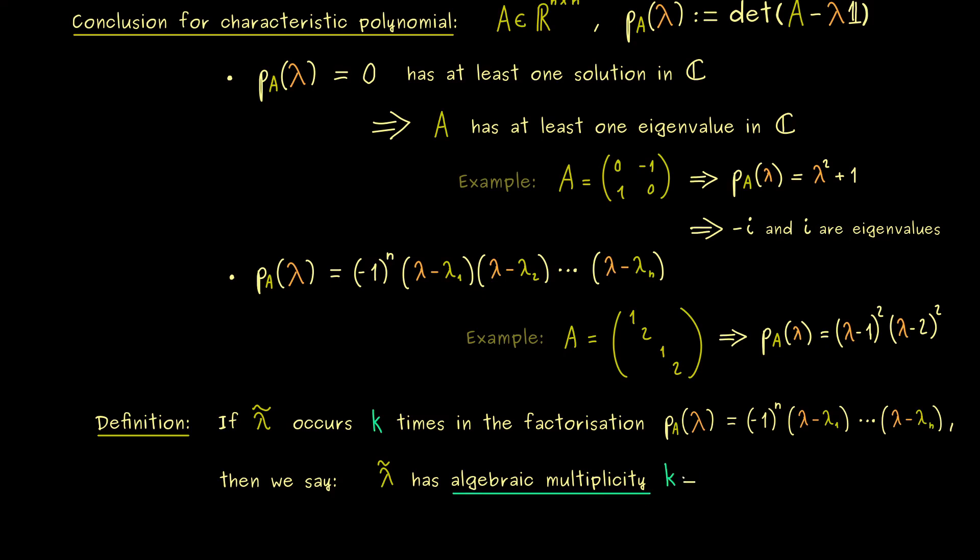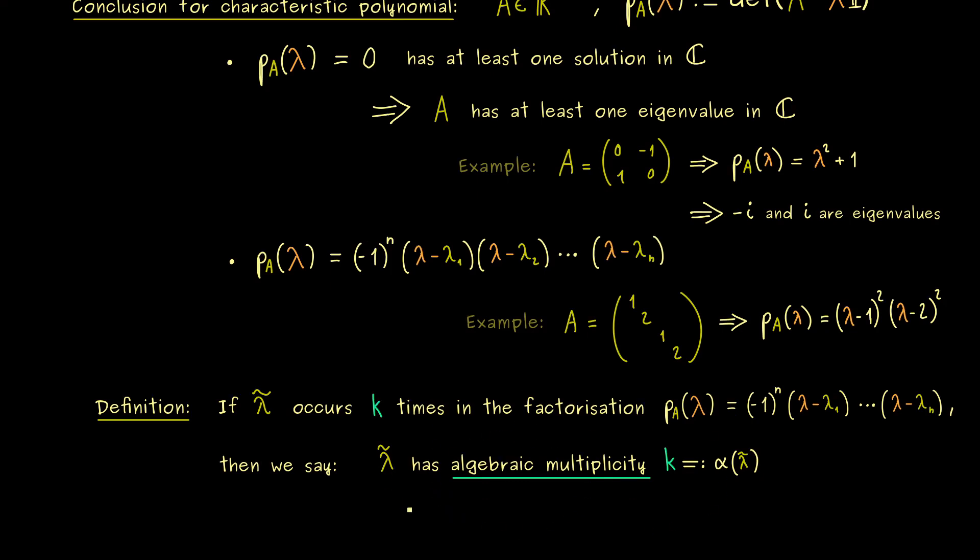Or to put it in other words, we say λ̃ has the algebraic multiplicity k. Moreover, there I can tell you usually we use a lowercase α to denote the algebraic multiplicity. So we would write α(λ̃) instead of k. Okay, there we have it. This is the whole definition of the term algebraic multiplicity.